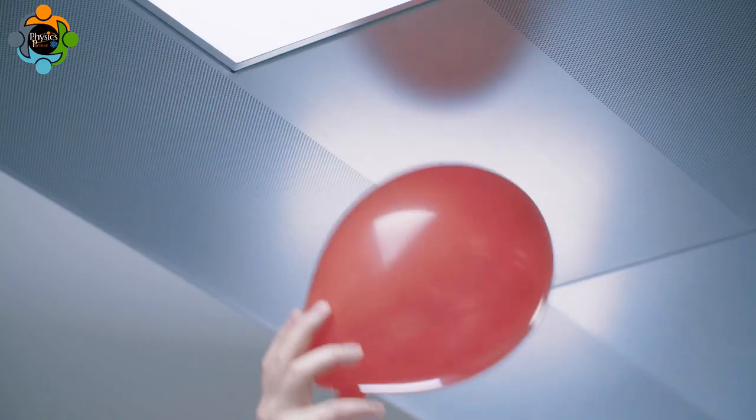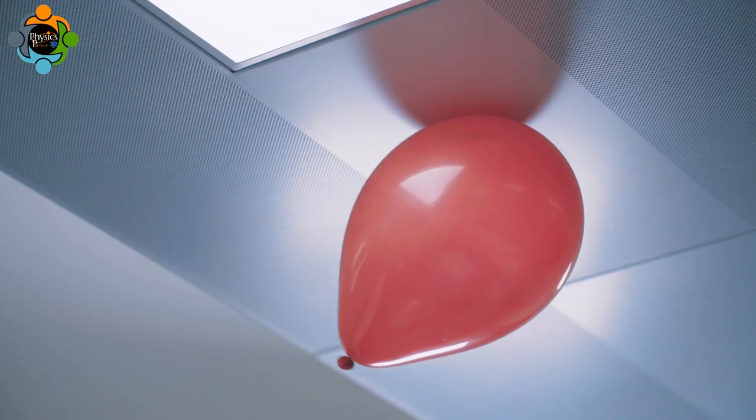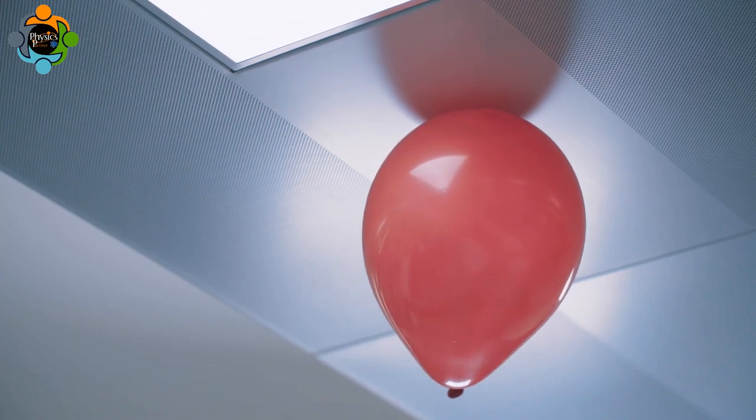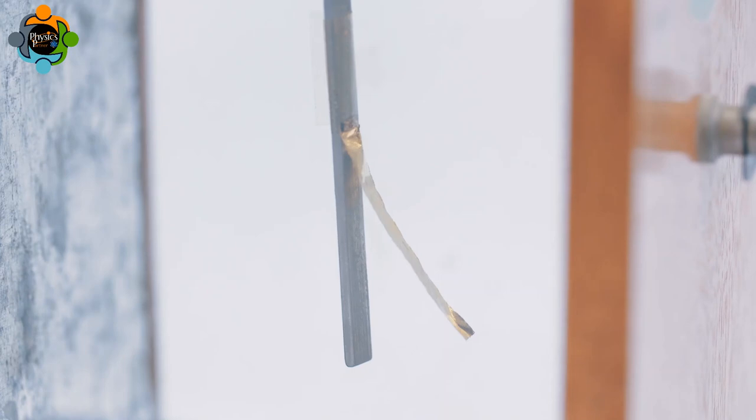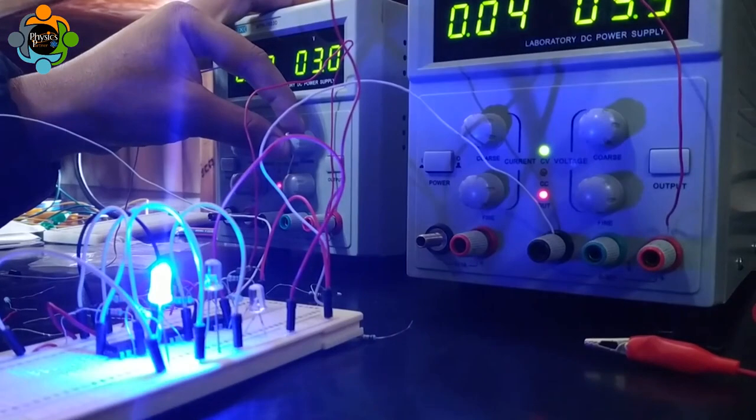When brought towards a neutrally charged object, the balloon experiences an attractive force. A gold leaf electroscope can also be used to show charging by induction. Electrostatic charge is accumulated by the gold leaf electroscope.